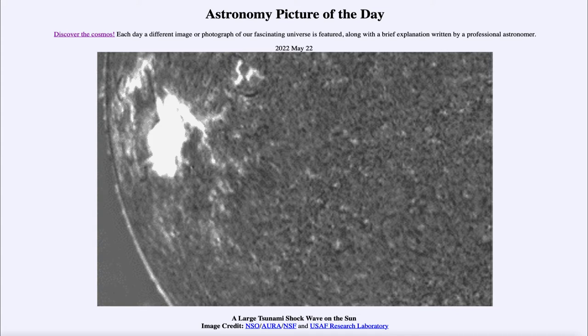Well, it is titled a large tsunami shockwave on the sun. So what do we see here? This is an image of the sun and it is taken looking at just the light emitted by hydrogen.